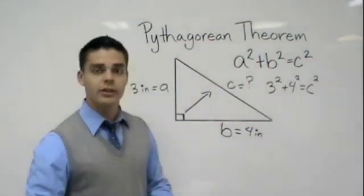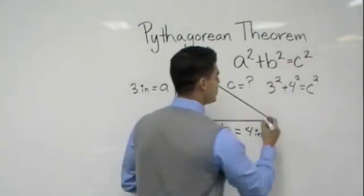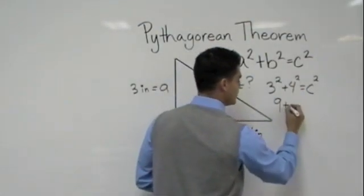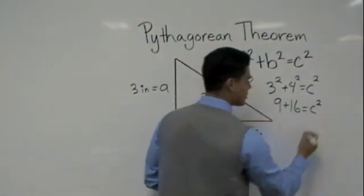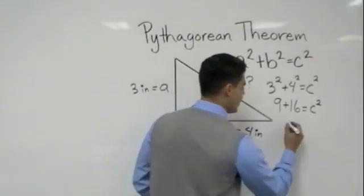Let's go ahead and do our squares now. Three squared is three times three, which should equal nine. Four squared should give us sixteen, and we still don't know what C squared is. Go ahead and do nine plus sixteen, and that should give you twenty-five, still equals C squared.